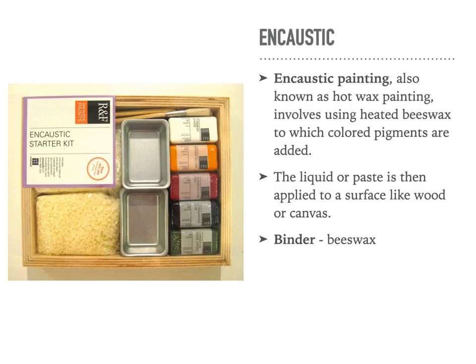Encaustic painting. Encaustic painting you don't see very much anymore. It was done a lot in the ancient world. It is a little bit messy because the binder for the encaustic paint is beeswax, which has to be heated. So you would have a candle burning and a metal pot with the beeswax in it, and then you'd add pigment to that. Or you could also have a burner in more modern times.